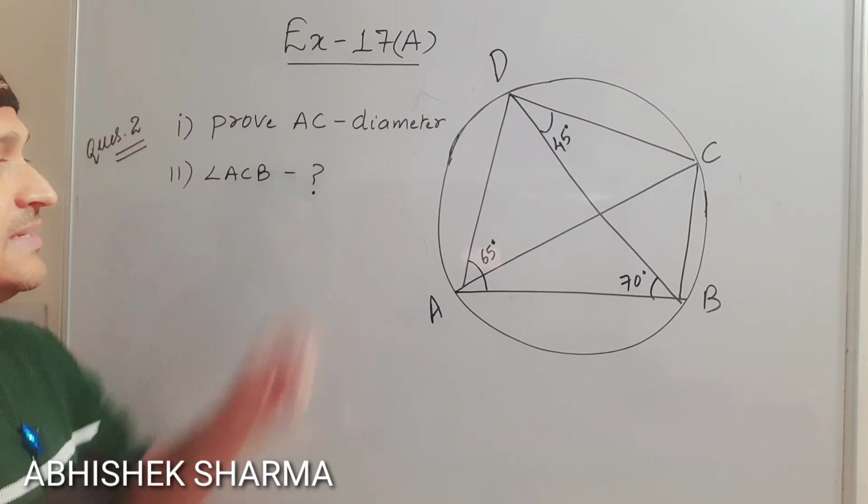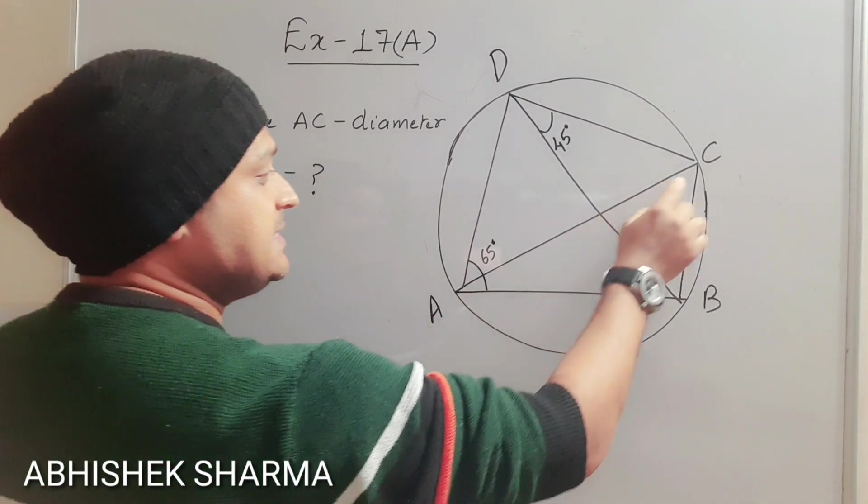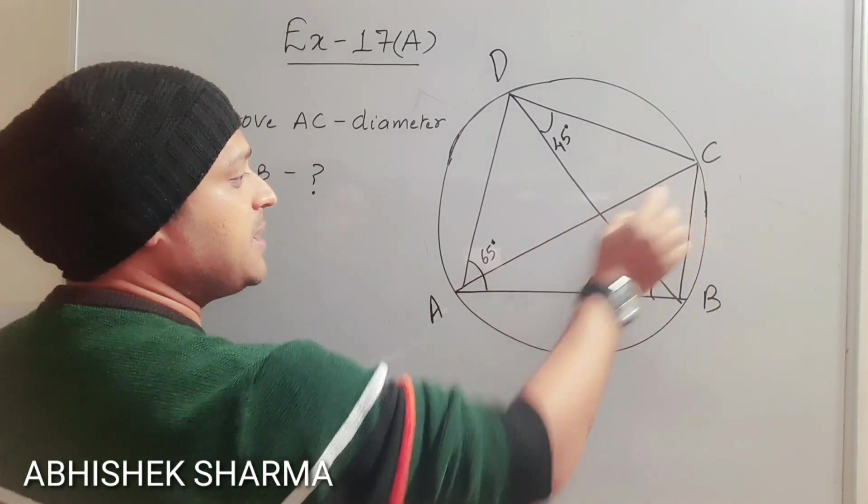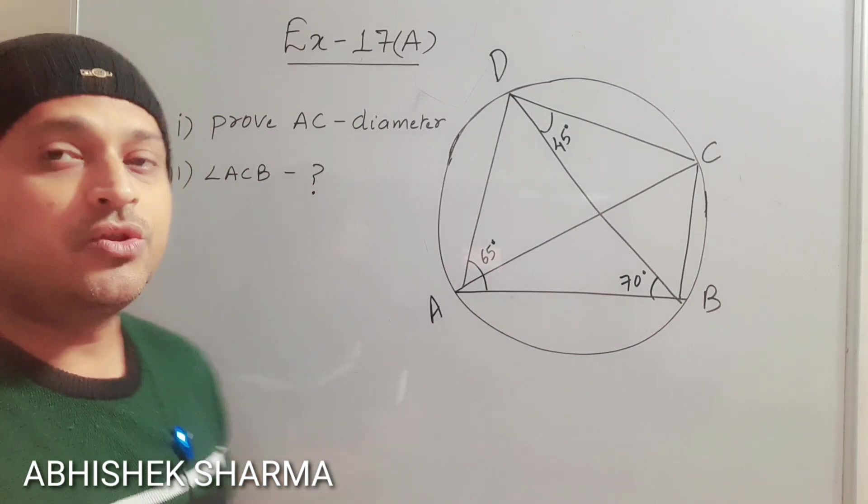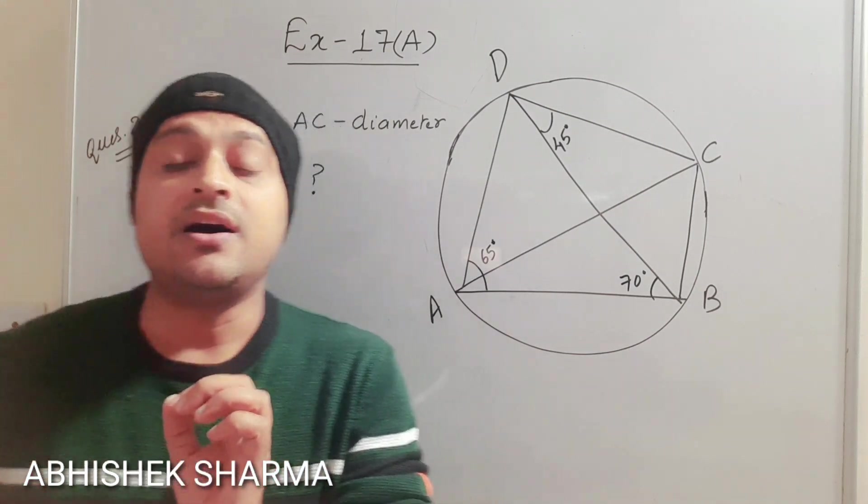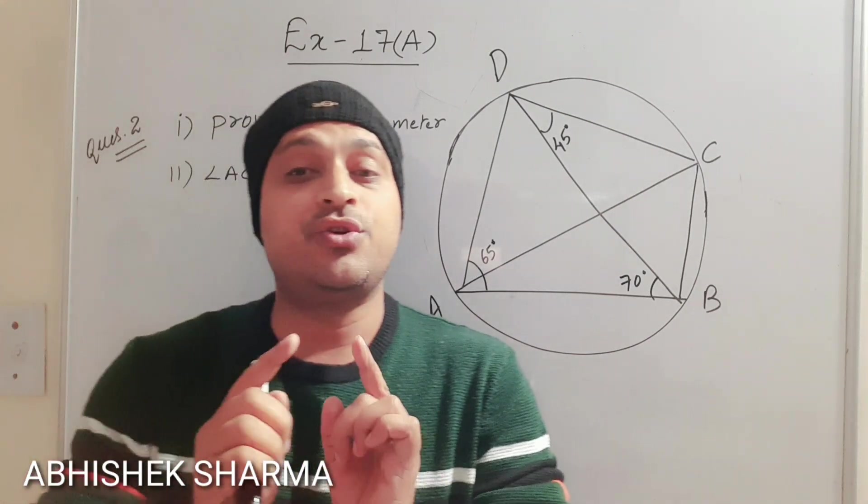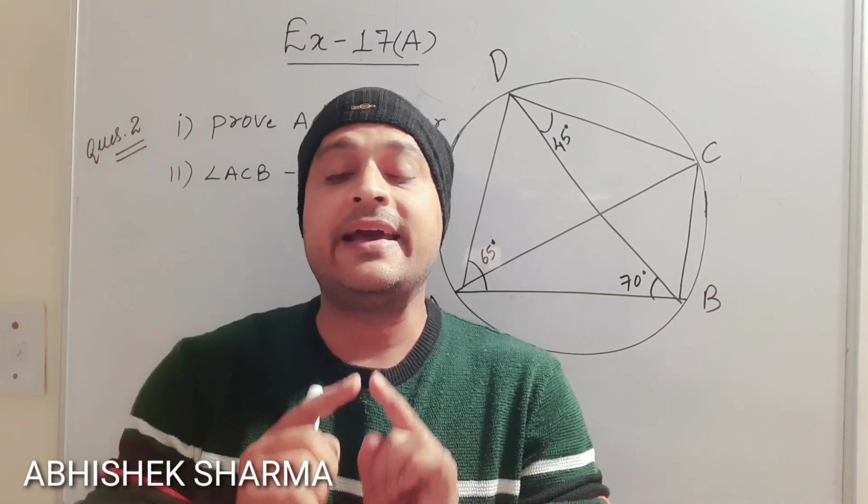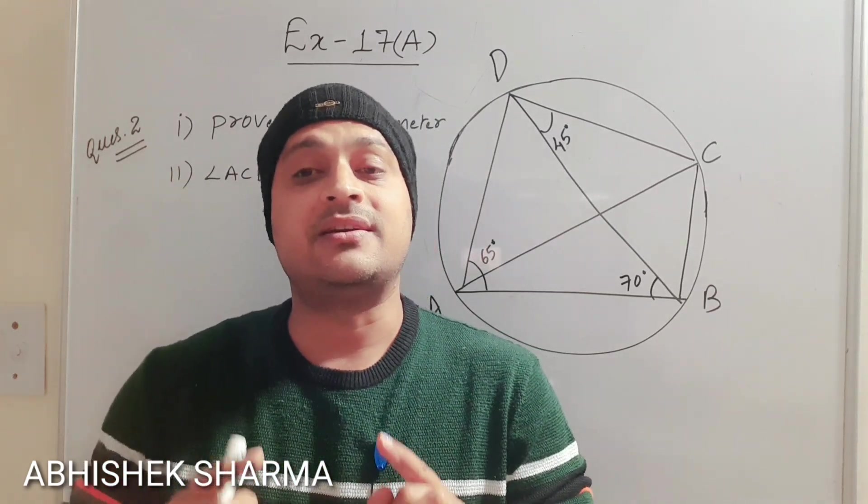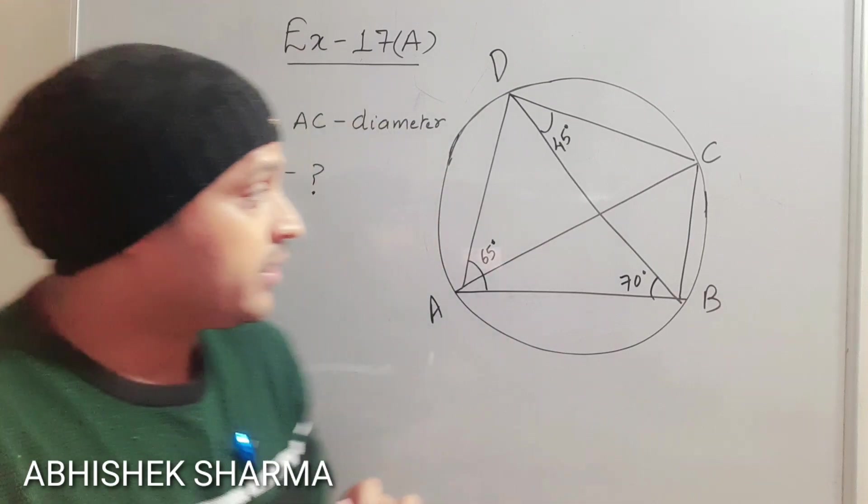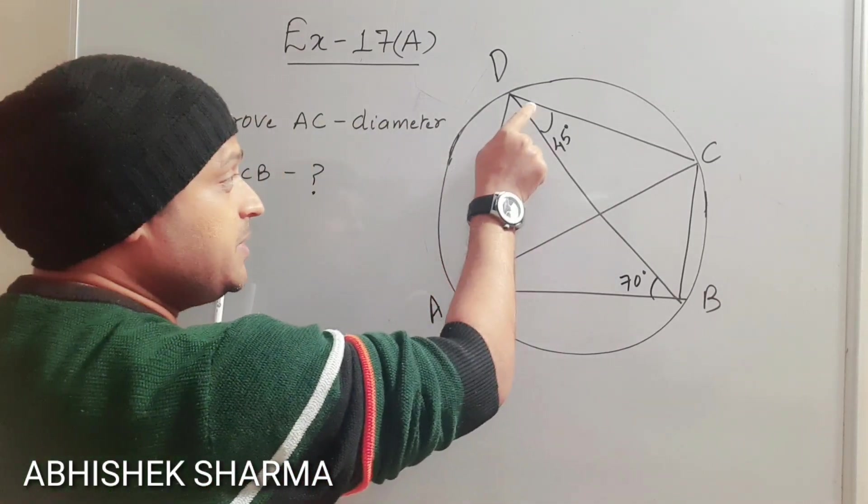What do we have to prove in the second question in the first part? We have to prove that AC is a diameter. Are you seeing this AC? AC is our diameter. I had told you that the angle at the semicircle is the right angle. So right angle, if we can prove it as 90 degrees.